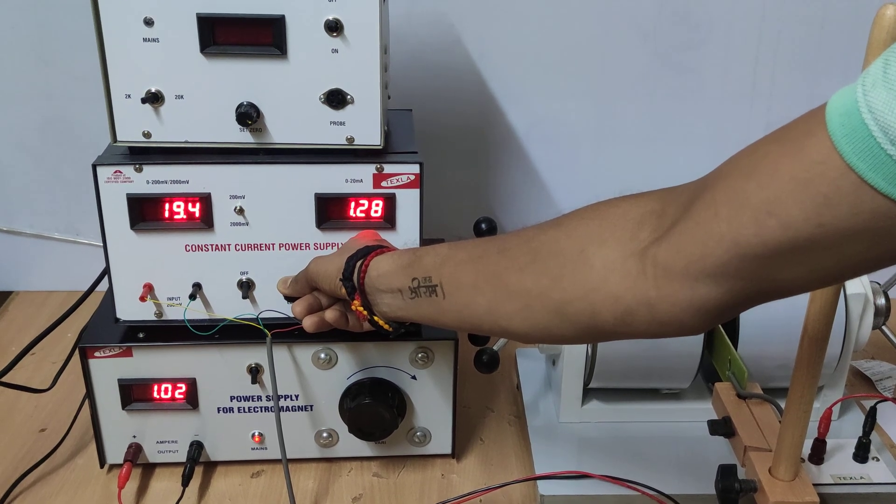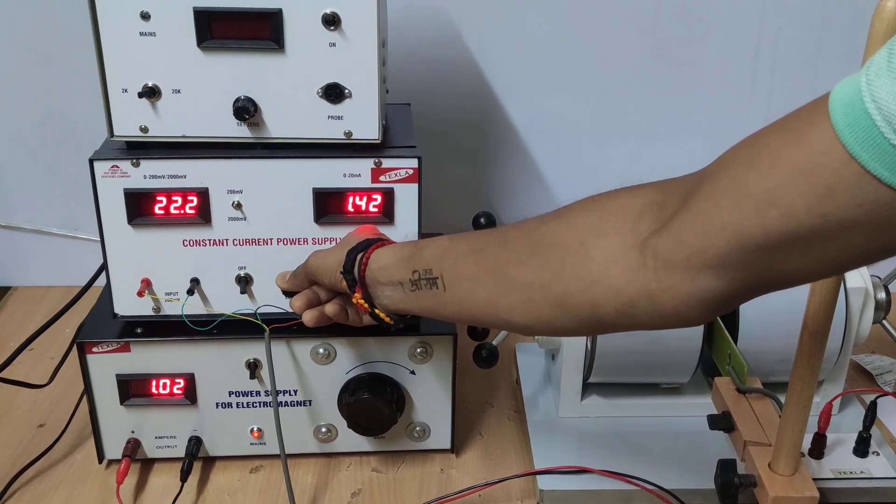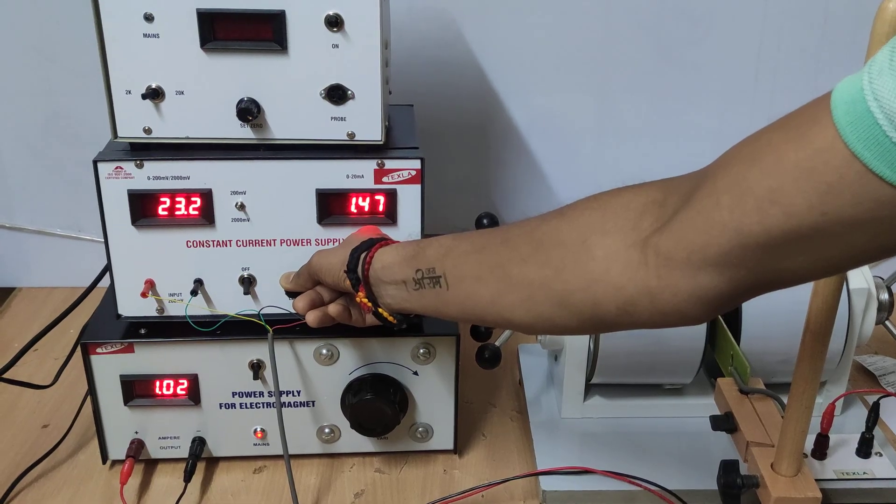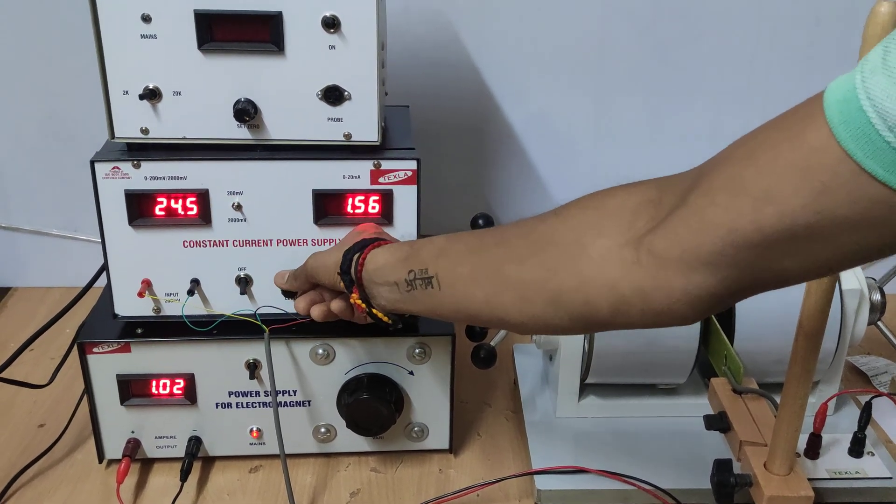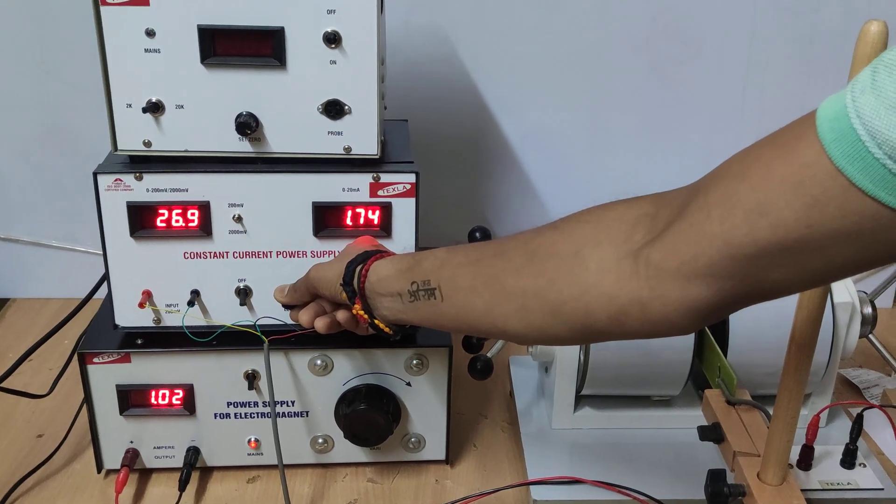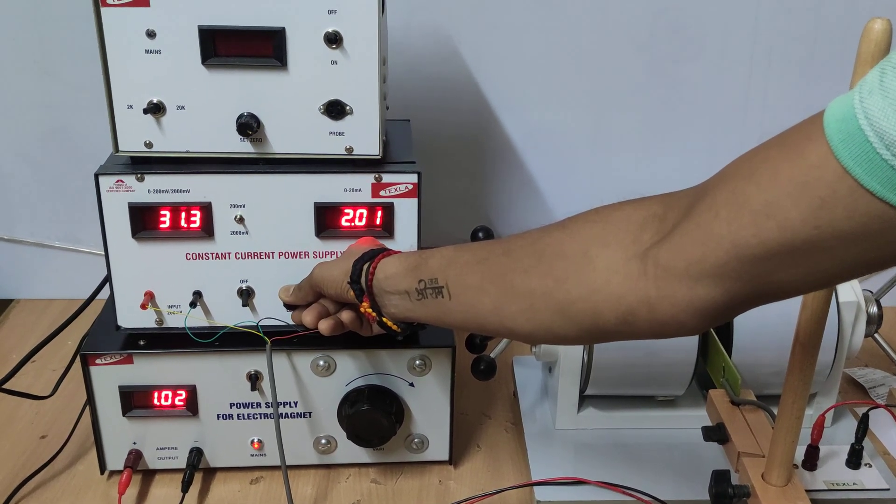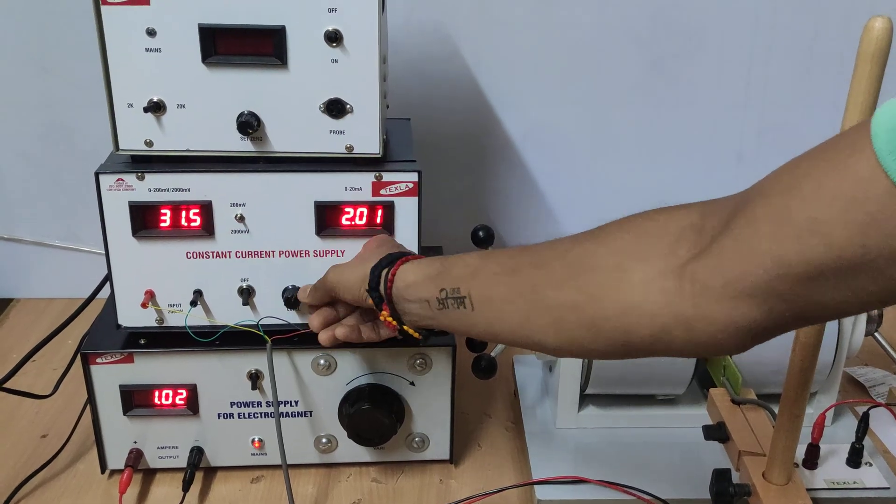Like that you have to. I am skipping the steps for like 1.5 to make the video faster. This is 1.5 milliampere, 24.5 millivolt. This is 2 milliampere, 31.5.